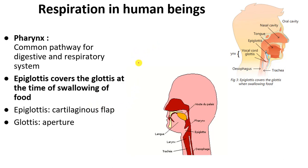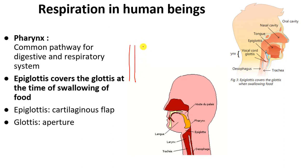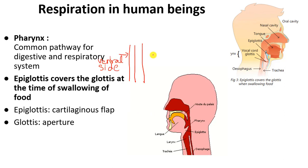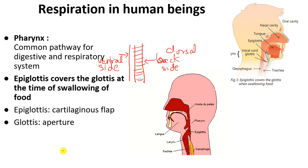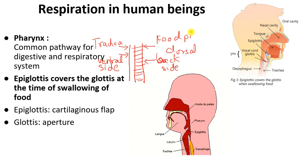After the air reaches the pharynx, which is a common part for the digestive and respiratory system, you have two pipes. The pipe which is ventral — ventral in biology is the front side of the body, and dorsal is the back side of the body. So after the pharynx, the first pipe is said to be trachea, the wind pipe, and the second pipe behind it is said to be the food pipe, also known as the esophagus.